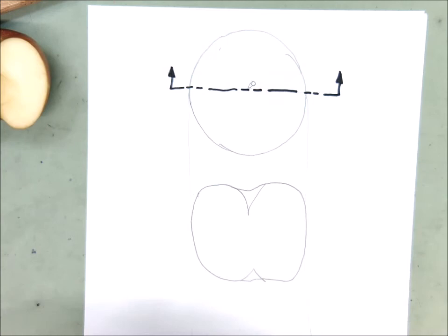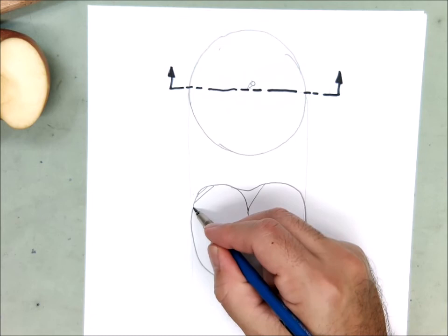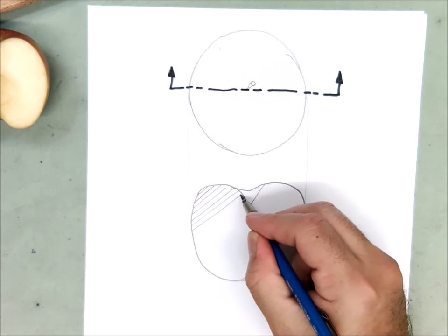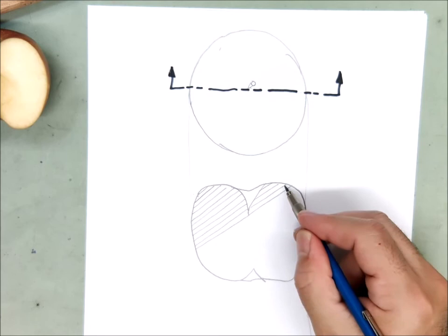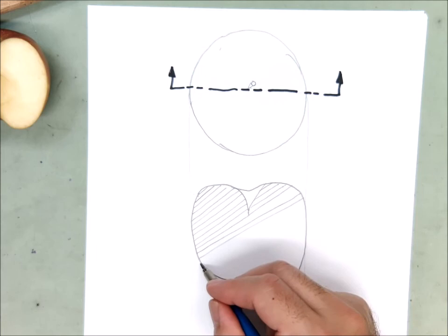And then the way that we show things are solid on a section drawing, on a section view, is we're going to add some diagonal lines at 45 degrees. We're going to try to space them evenly. And where it is shaded in like this, with these section lines, we'll know that that part is solid.